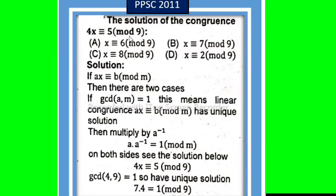congruence 5 mod 9. Solution: if ax ≡ b(mod m), then there are two cases. First one is if gcd(a,m) = 1, this means linear congruence ax ≡ b(mod m) has unique solution.